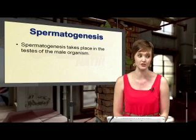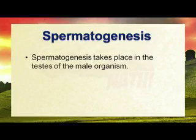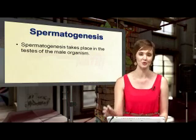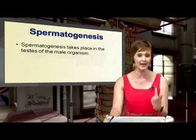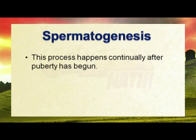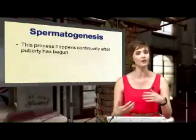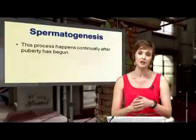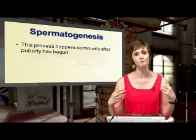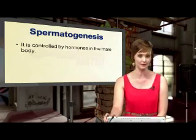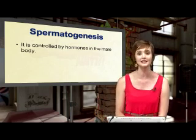Let's have a look at spermatogenesis first. This takes place in the male reproductive organ — the testes. We are looking at the production of sperm cells. Listen to the vocabulary because you will be asked questions on that. Specialized cells undergo meiosis to produce haploid sperm cells. This process happens continually after puberty has begun, which can begin anywhere between 10 and 16 years of age. Hormones such as testosterone trigger and control this process.